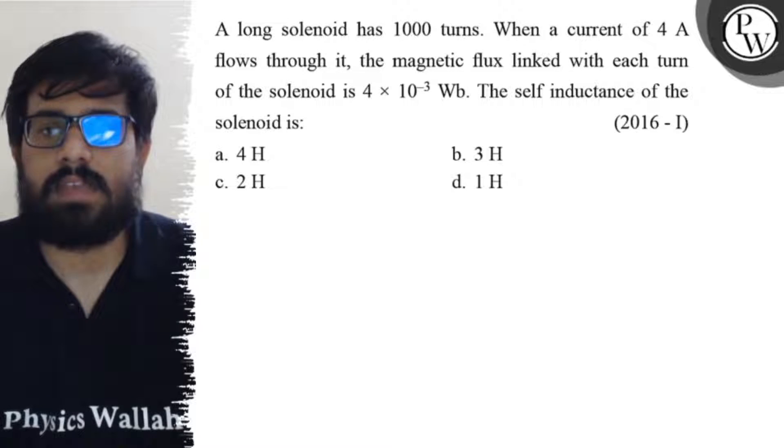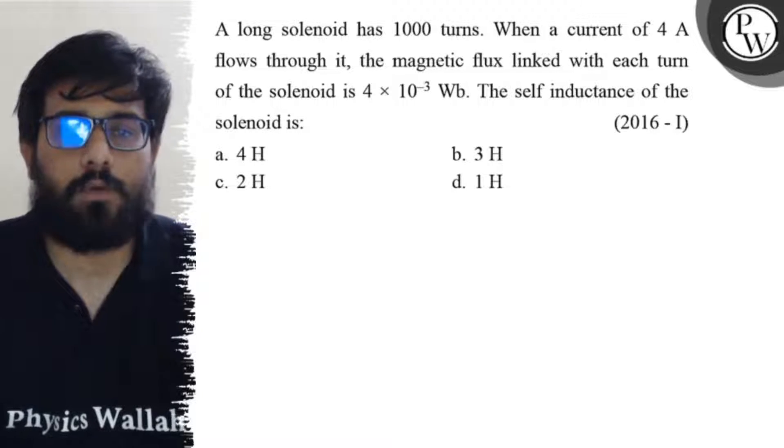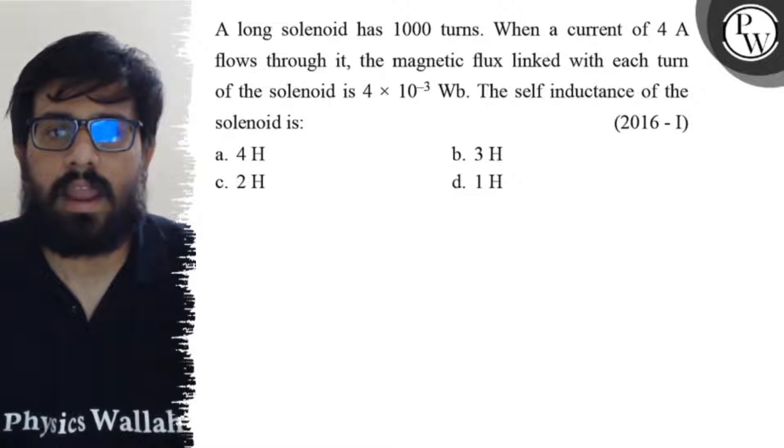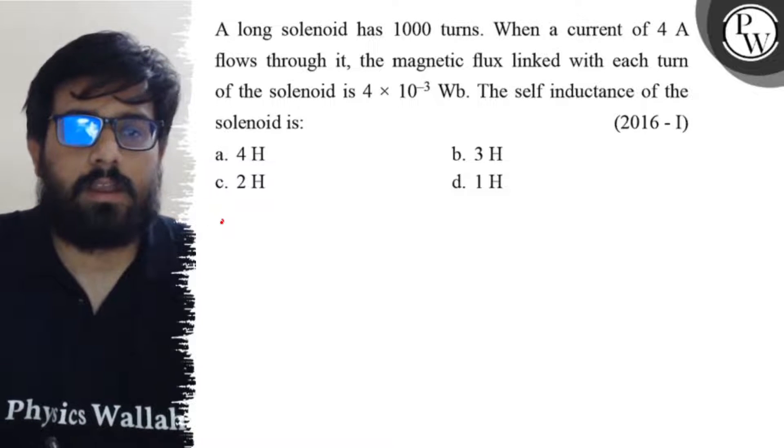The self-inductance of the solenoid is: option A is 4 henry, option B is 3 henry, option C is 2 henry, and option D is 1 henry.